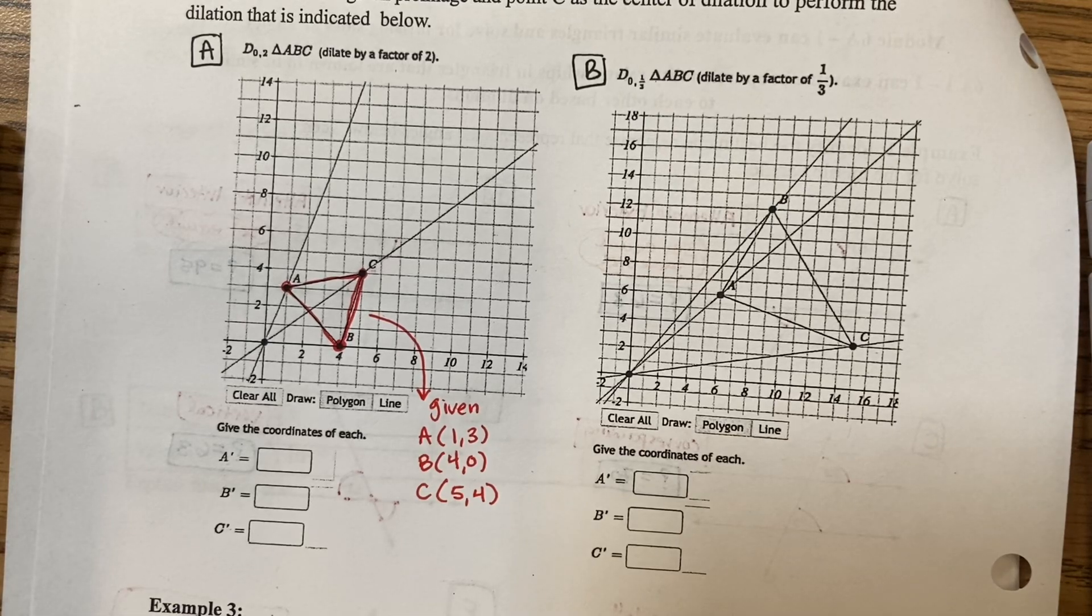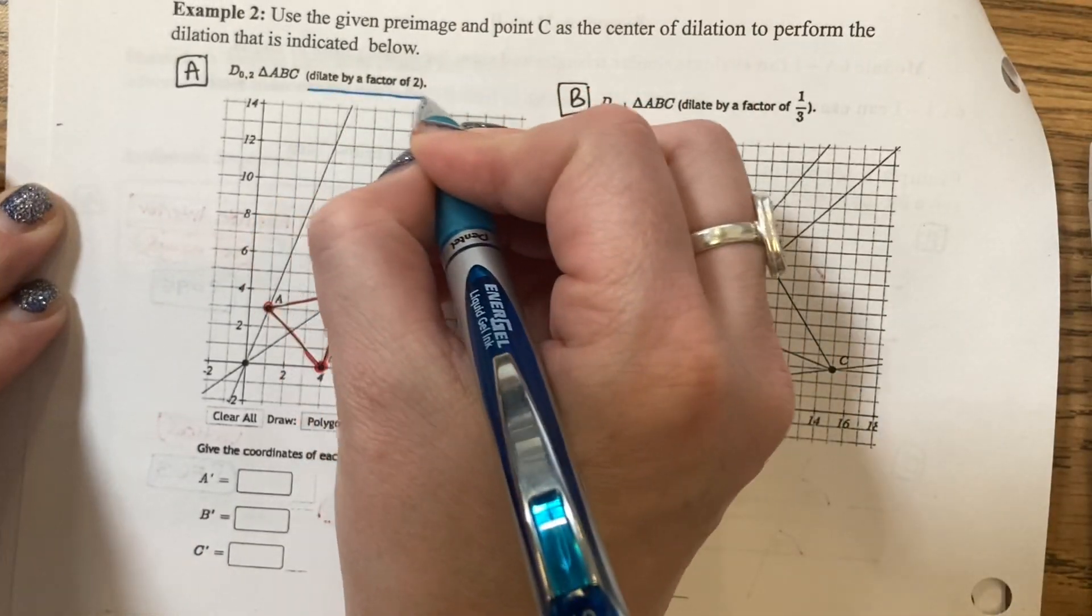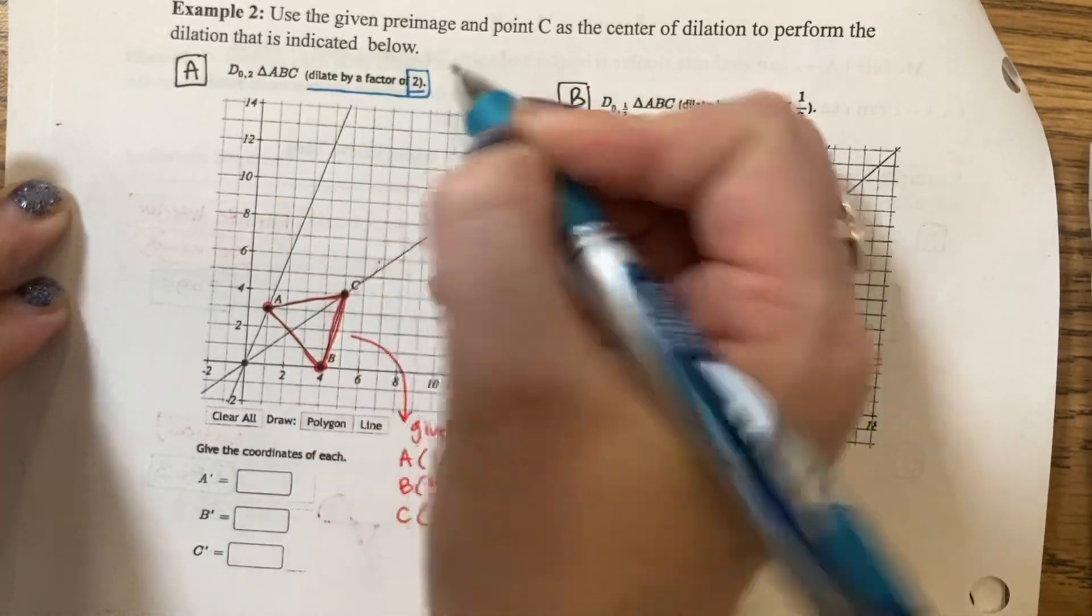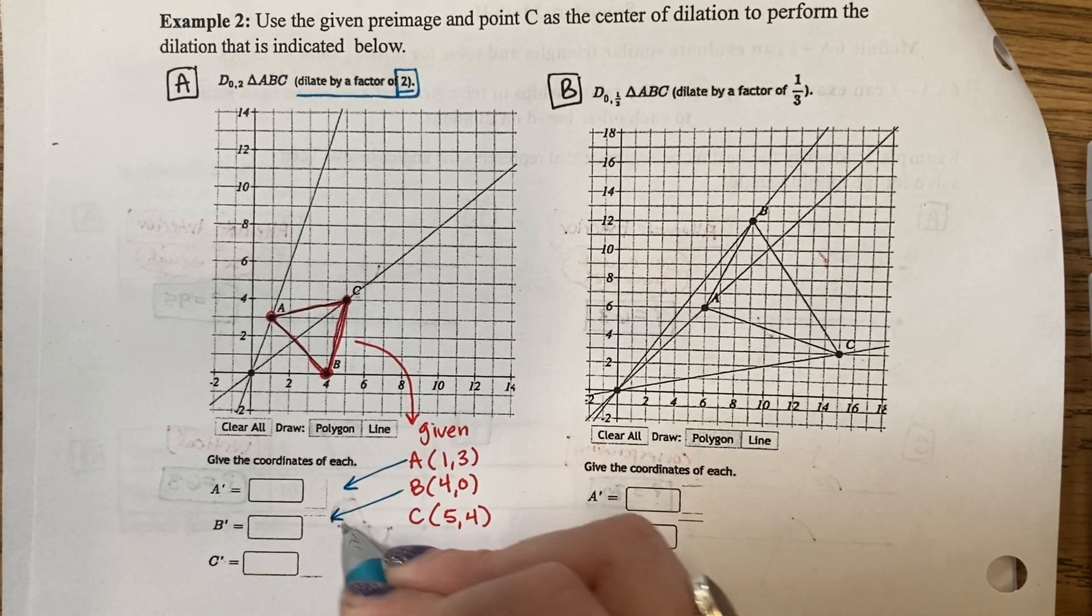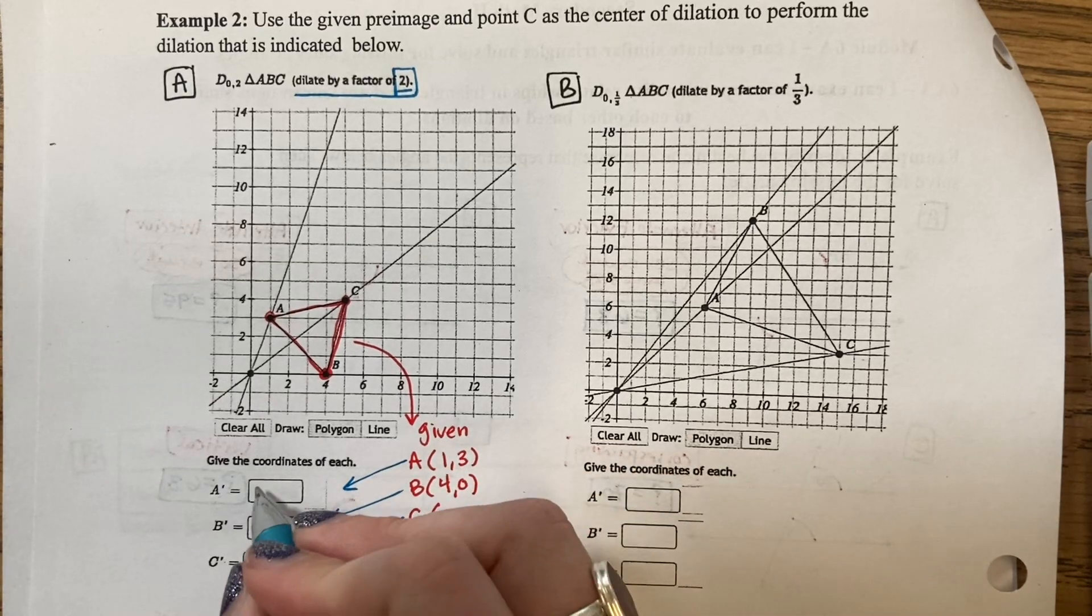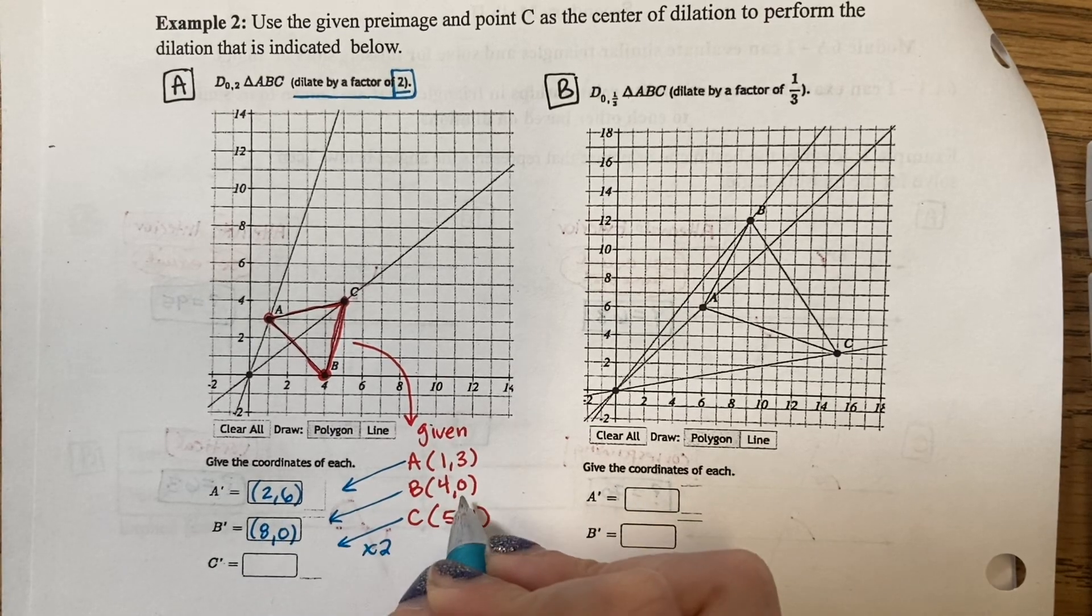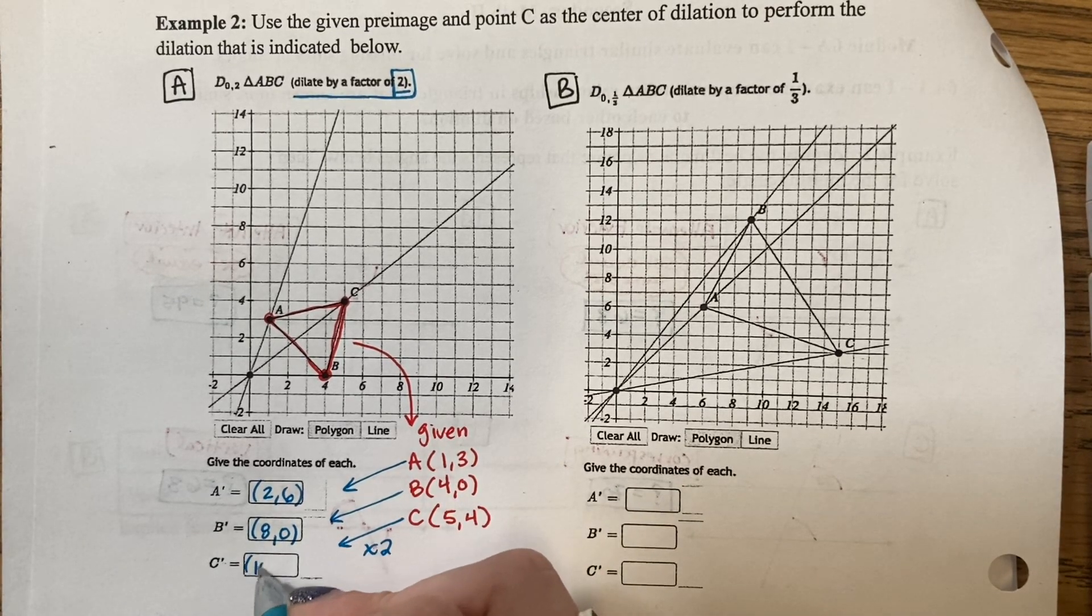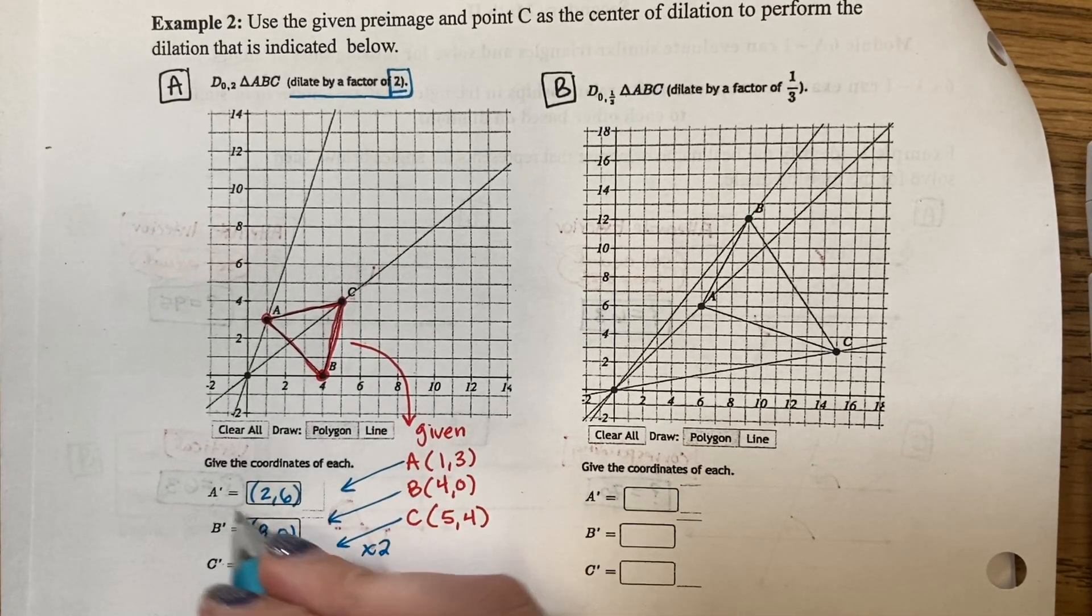Now, for this triangle, it asks me to dilate by a factor of 2. So if I dilate by 2, my new coordinate points are going to all be times by 2. So 2 times 2 is 4, 4 times 2 is 8. 0 times 2 is 0, 5 times 2 is 10. 4 times 2 is 8, 1 times 2 is 2. These are my new coordinate points.